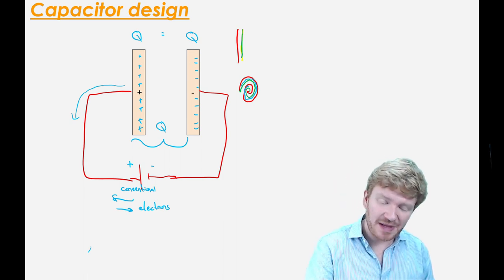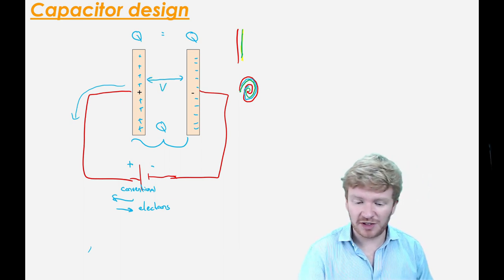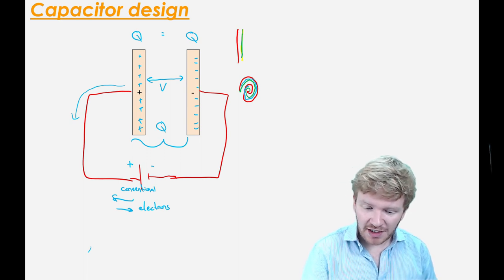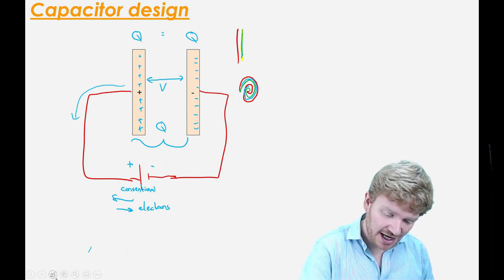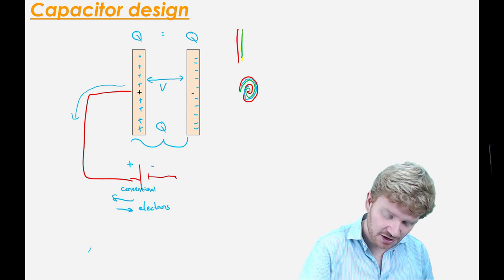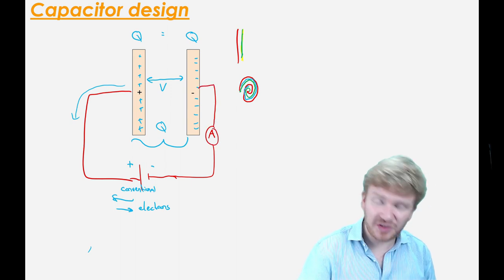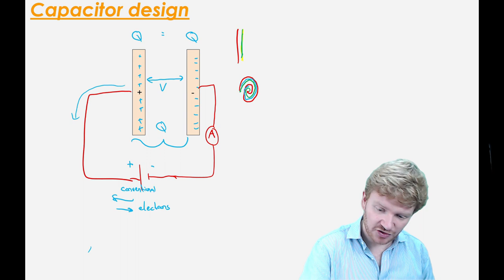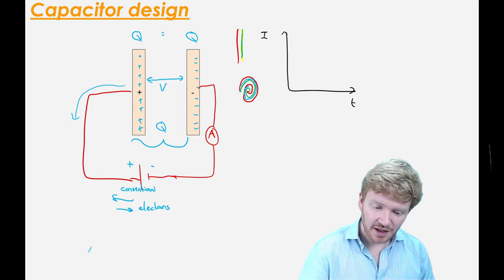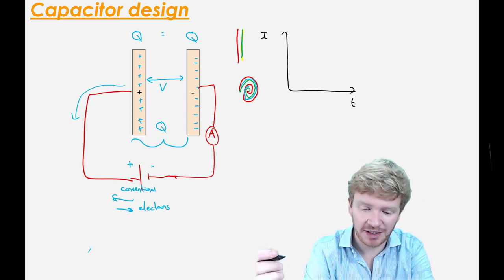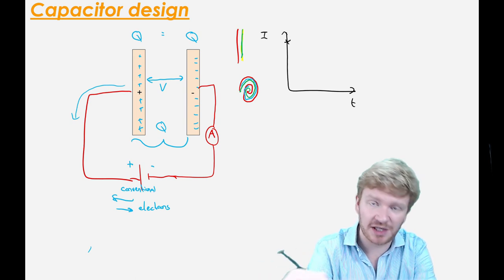As I build up an imbalance of charge, I'm going to start to create a voltage between these two plates. Let's just think about how that will work in practice. Imagine I put in an ammeter here. What can we say about the current in this circuit as I charge it up? Let's put in a graph — here's my current, here's my time. When I first connect this to the power supply, there's going to be no imbalance in charge, so I'm going to get a very large current, up here in my graph. Current will flow very rapidly.